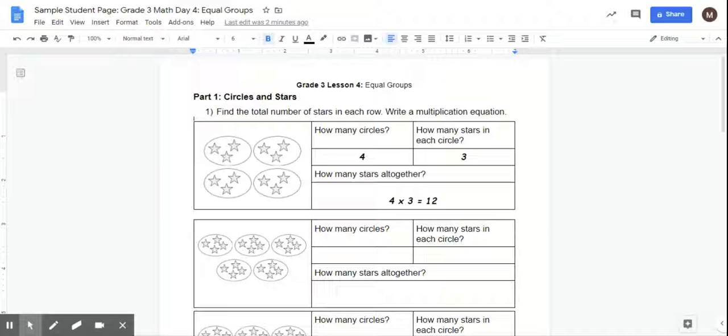So as you can see, they find the total number of stars in each row by the multiplication equation. Well, when they say row, they mean like this whole section. They already have this one four. So how many circles do I see? I see one, two, three, four. How many stars are in each circle? So just one of those circles, I see one, two, three. They've already answered that.